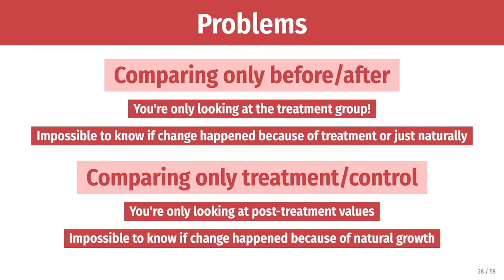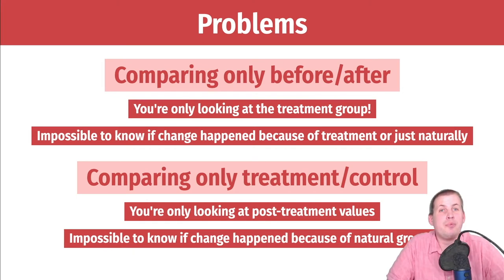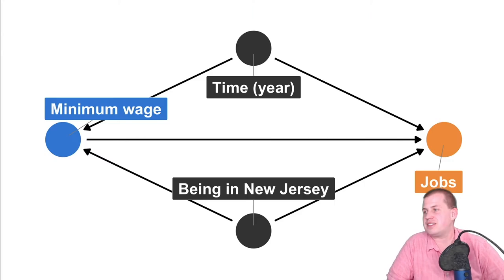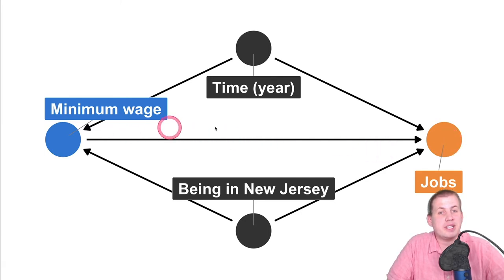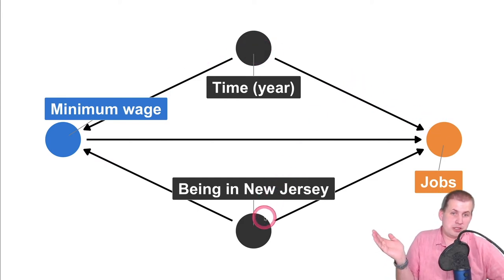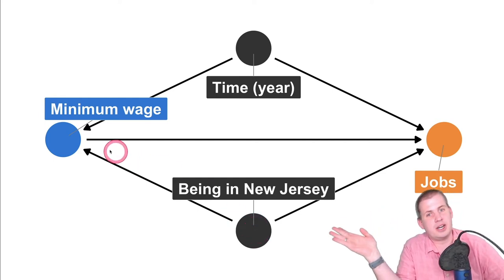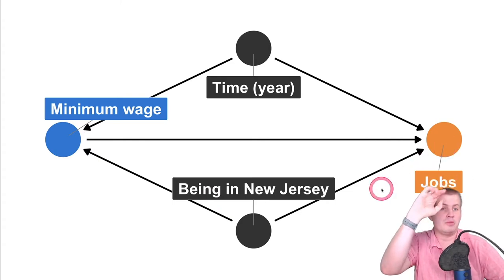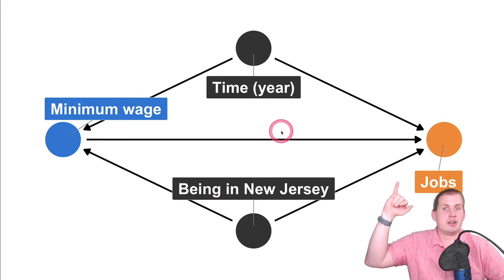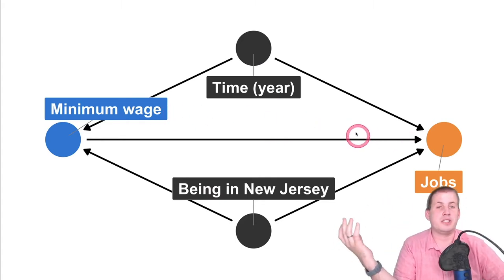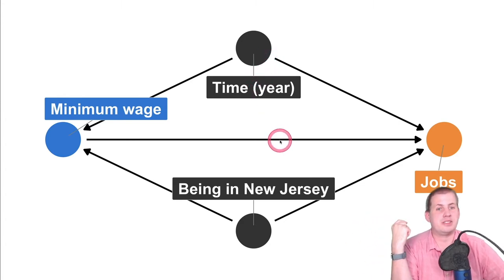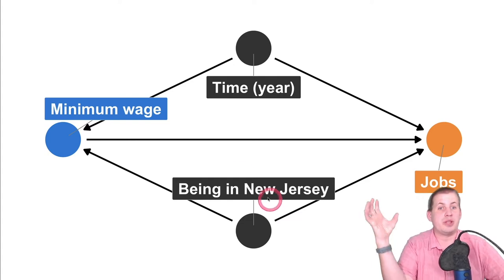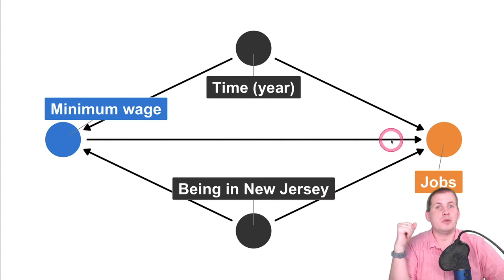This is clearer if we draw a DAG. The minimum wage increase is causing some change in jobs, but that arrow we want to isolate is confounded by time — the year the minimum wage change happens, which also influences jobs — and by being in New Jersey, which causes a difference in minimum wage and also some change in jobs. So both location and time are confounders. Statistically, we need to deal with both time and location to isolate the effect between minimum wage and jobs, which is exactly what difference-in-differences lets you do.